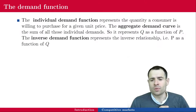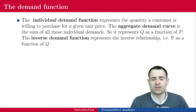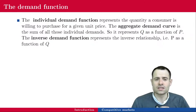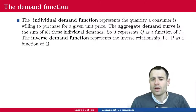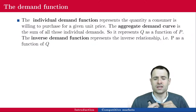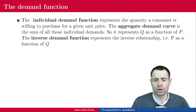The individual demand curve represents the quantity a consumer is willing to purchase for a given unit price — the optimal quantity in the sense that this is the quantity that maximizes the consumer's utility. So it's Q as a function of P: the quantity as a function of the price. The price is given. The aggregate demand curve is the sum of all these individual demands, representing an aggregate quantity as a function of the unit price of the good P.